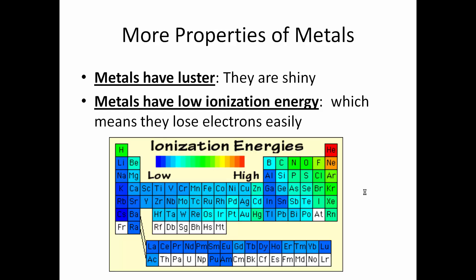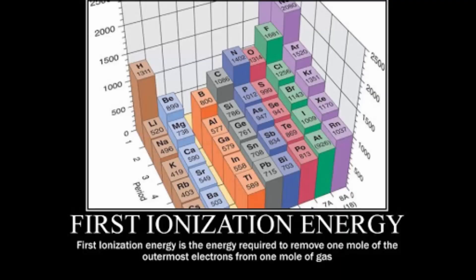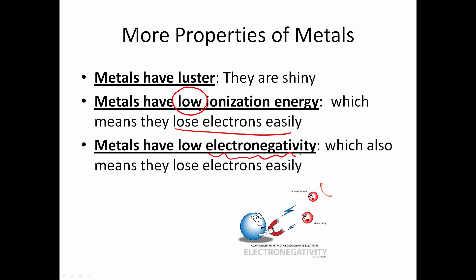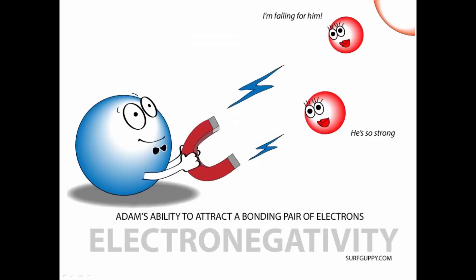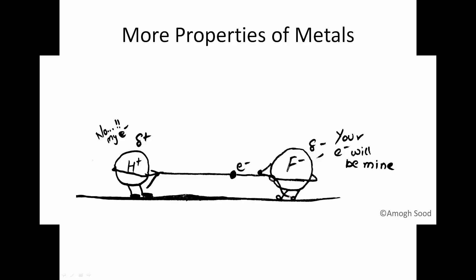Metals have very low ionization energy, meaning they lose electrons very easily. Low ionization energy means electrons are being lost without requiring much energy to pull them away. First ionization energy is defined as the amount of energy it takes to pull off an atom's most loosely bound valence electrons. Metals also have low electronegativity — the attraction an atom has for another atom's electrons in a bond. Metals have hardly any pull, so they lose their own electrons easily.